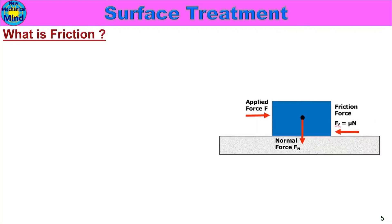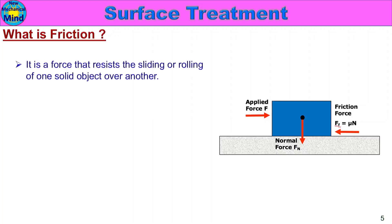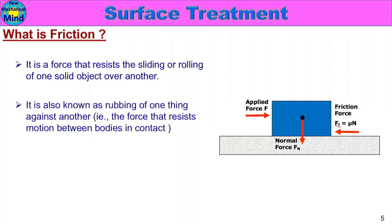To reduce friction — what is friction? Friction is the force that resists sliding or rolling of one solid object over another. It is also known as rubbing of one thing against another — the force that resists motion between bodies in contact.